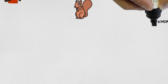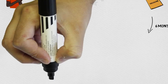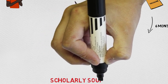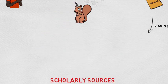After about six months or so, we begin to see the emergence of a whole new type of source. These are called scholarly sources because, well, they're just that.